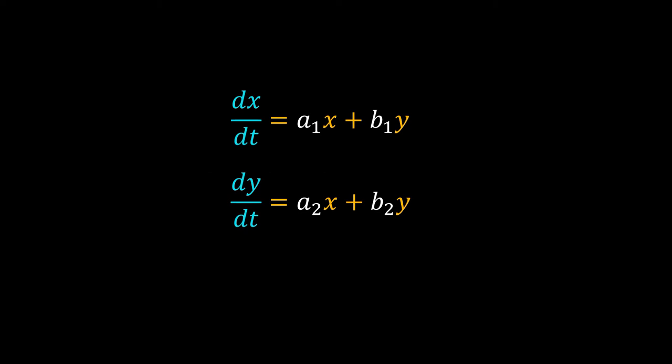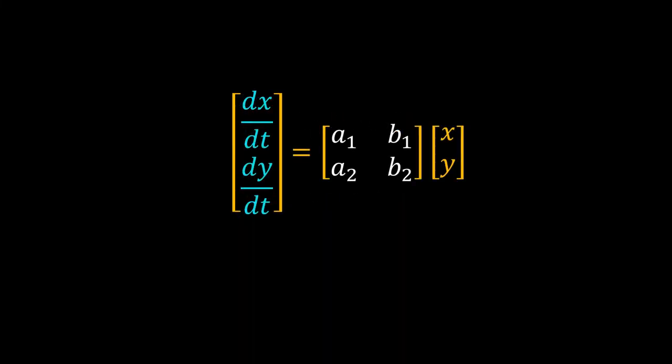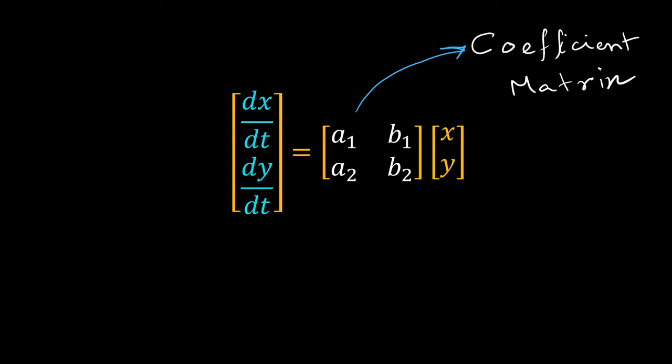Welcome back. We have a system of linear ODEs. There is no constant term on the right-hand sides, so this is a system of homogeneous equations. We can write this system using matrix notation. The dependent variables and their derivatives form two column vectors, and a square matrix is formed by the parameters of the equations. This square matrix is called the coefficient matrix. The vector on the right-hand side is the position vector of the system, as it gives the position of the system on the phase plane.